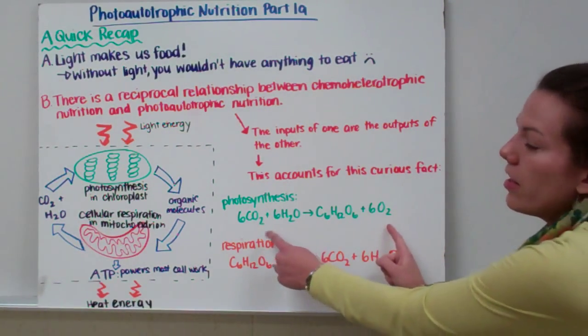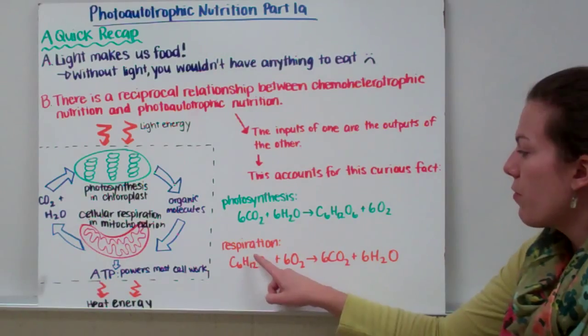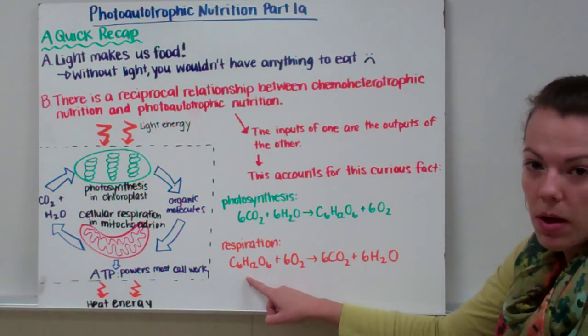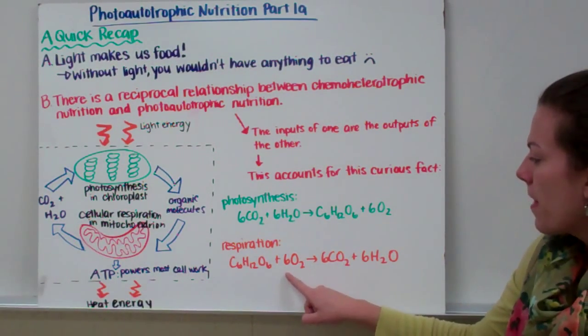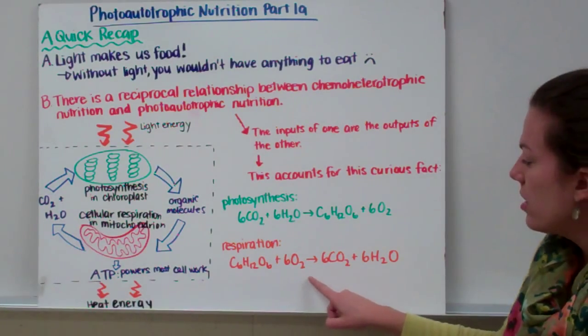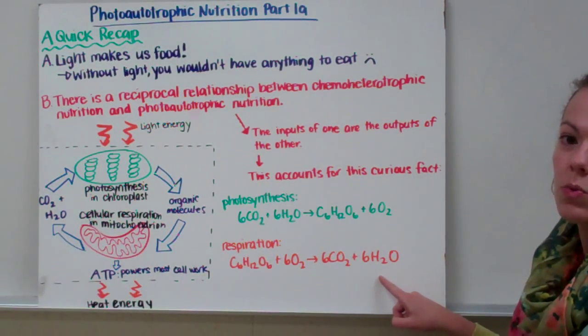But then if we look at respiration, the equation is flipped. So for respiration, we have a glucose molecule, C6H12O6, and six molecules of oxygen yield six carbon dioxide and six water molecules.